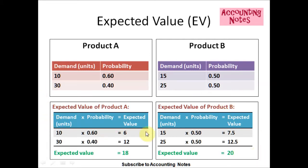In order to find the expected value, we take the demand and multiply with the probability. For Product A, the demand for the first week is 10. So, 10 times the probability of 0.60 equals 6.